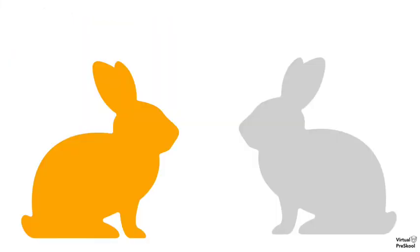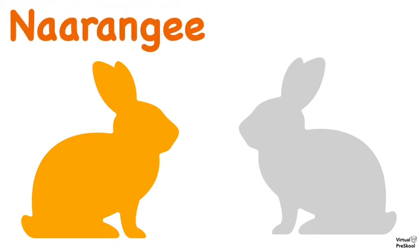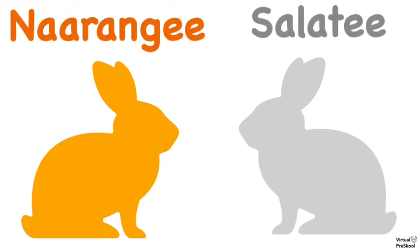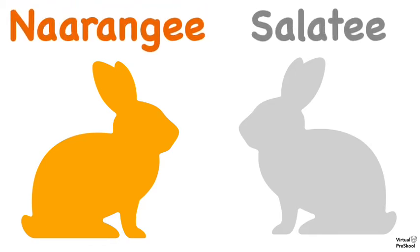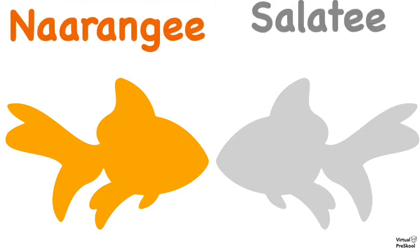Orange is narangi and gray is saleti. Let's do those again. Orange is narangi and gray is saleti.